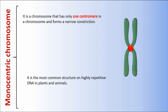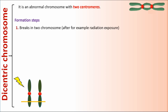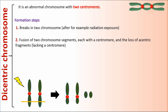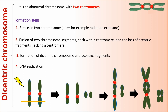A dicentric chromosome is an abnormal chromosome with two centromeres. Formation steps include: Step 1, breaks in chromosomes after, for example, radiation exposure. Step 2, fusion of two chromosome segments each with a centromere, and the loss of acentric fragments lacking a centromere. Step 3, formation of the dicentric chromosome and acentric fragments. Step 4, DNA replication.